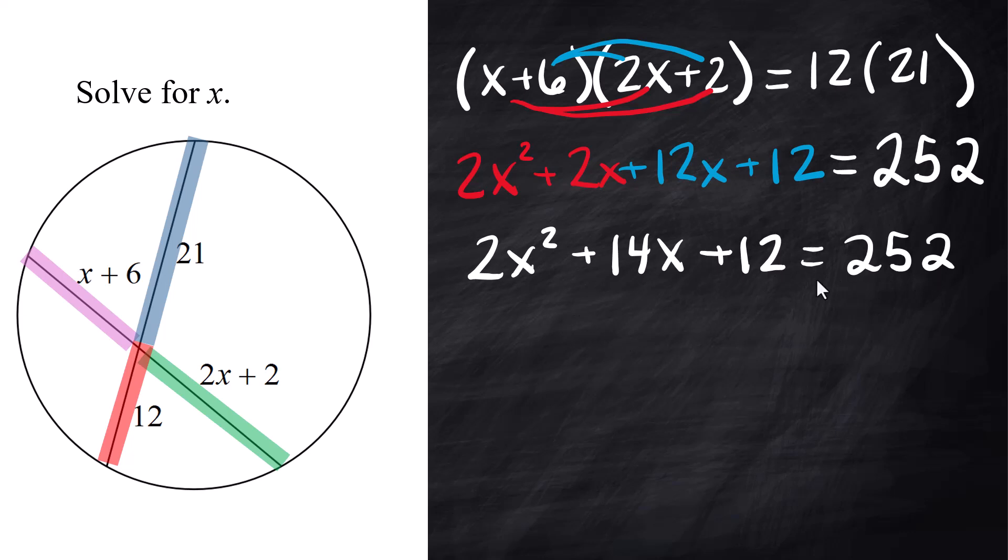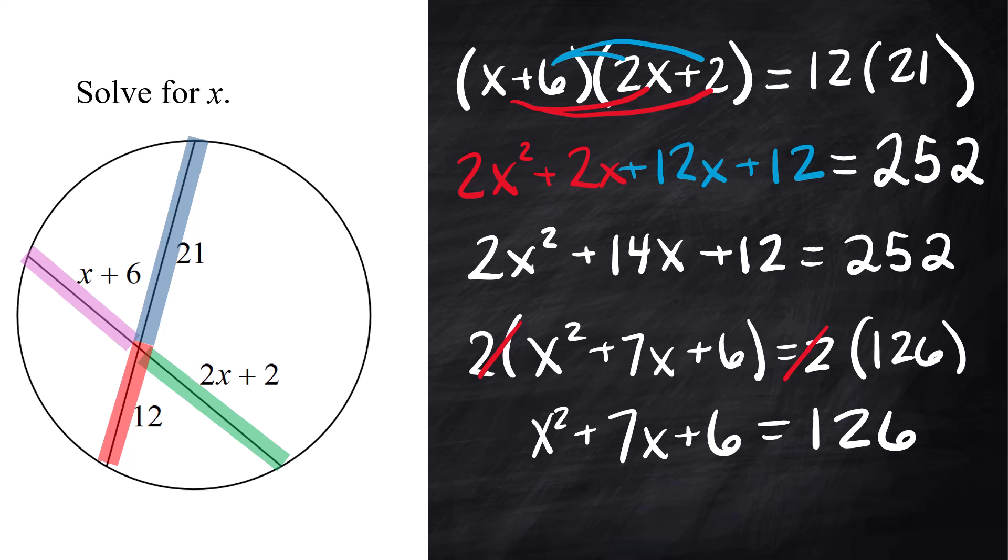Next step for me is to see if I can factor anything out and cancel, because these numbers are all even. So I can factor a 2 out of both sides, and then I'll be able to cancel that 2. So out of the front, there it is. And out of the back, 2 times 126 is 252. And beautiful, the 2's cancel. So I have an easier problem to solve right now, which is x squared plus 7x plus 6 equals 126.